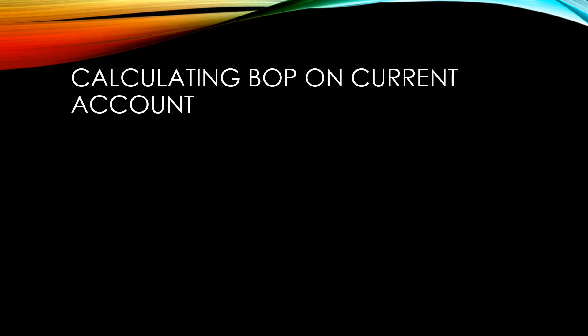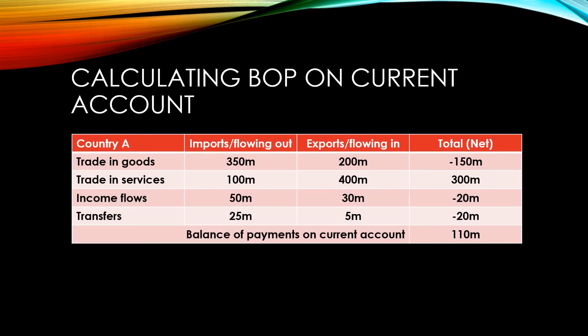If we look at this example, you can see how we calculate the balance of payments on current account. Country A has 350 million worth of imports in goods, but they export 200 million worth of goods — a net of minus 150 million. When it comes to services, they import 100 million worth of services but they export 400 million, a net positive of 300 million.